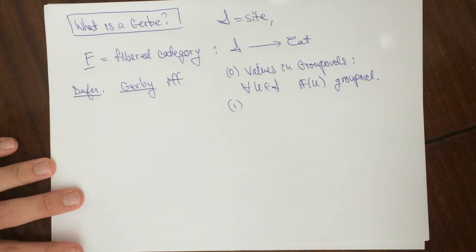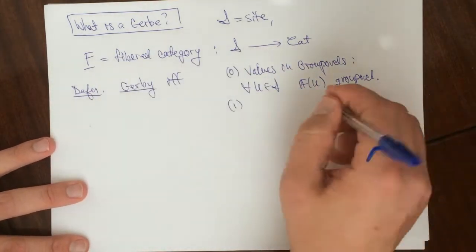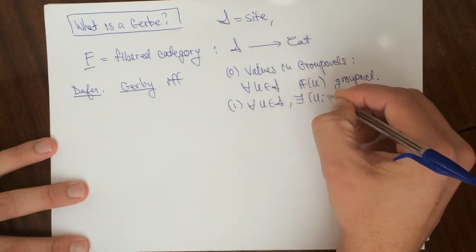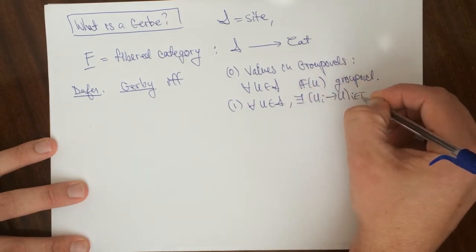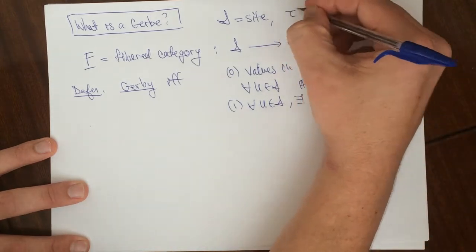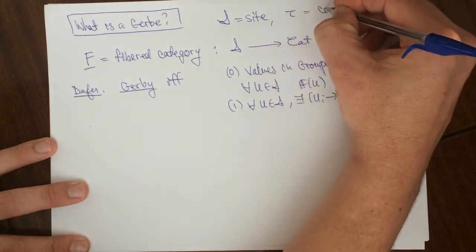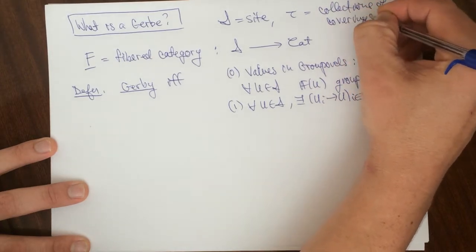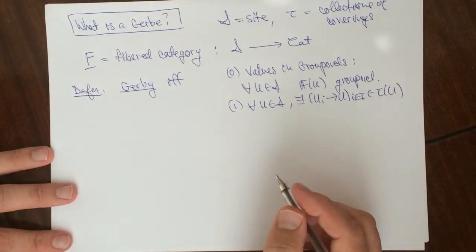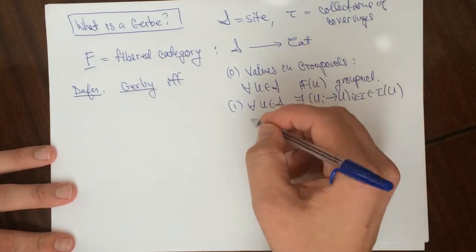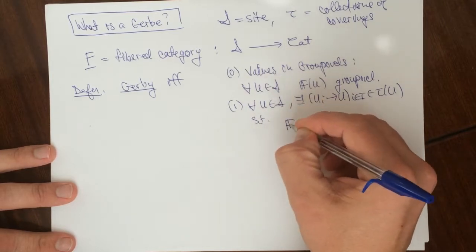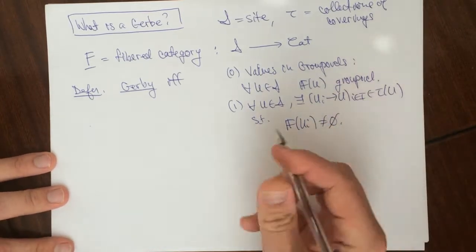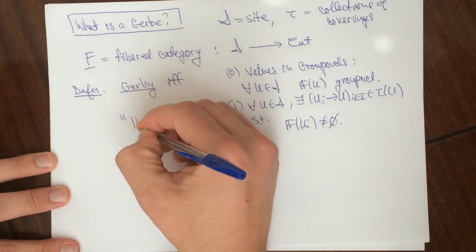Okay, the next property is that there exists sections. So let's say for all U in S, so there exists a cover Ui to U, I in I, in tau of U. Okay, so let's say this is the collection of distinguished coverings, of coverings for the site S. Okay, and then, such that f of Ui is not empty. Okay, so this is has sections.